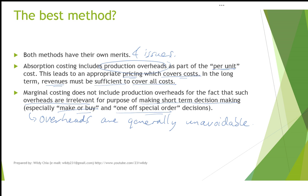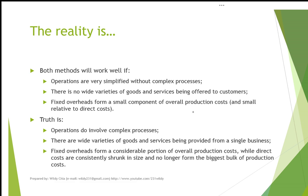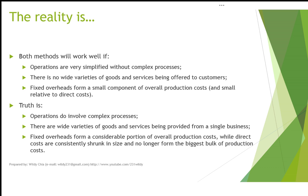The downside of the marginal costing approach is that it has left out production overheads from the cost of each unit of output. Potentially, the cost per unit may be too low and may not be sustainable over the longer term. Both methods will work well if operations are quite simplified without complex processes, and if there are no great varieties of goods and services being offered, then absorption and marginal cost approaches are perfectly fine. It's even better if fixed overheads form a small portion of the overall production costs.